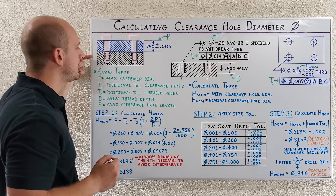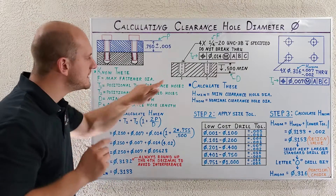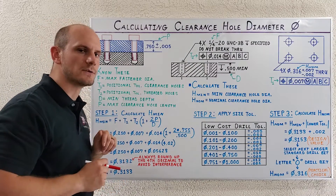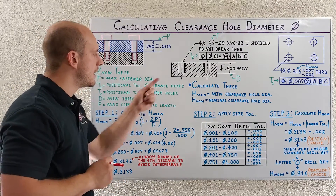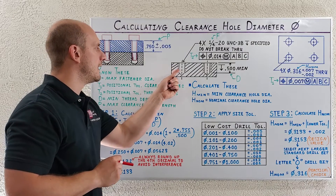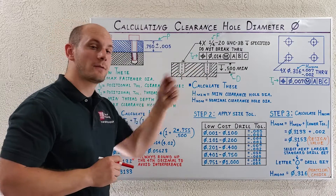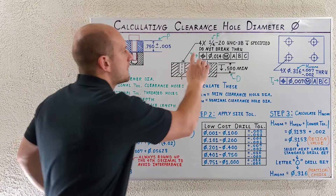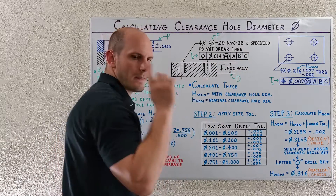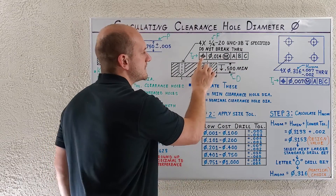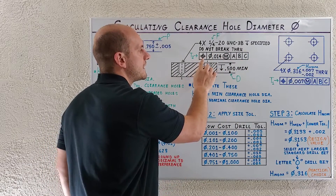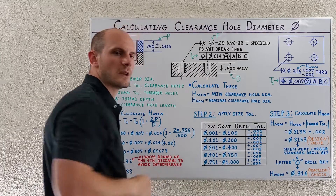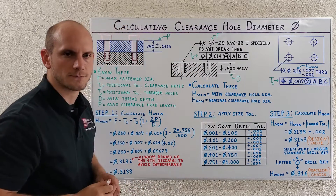For this lower plate I'm detailing that here in this section view. I've got my lower plate, my blind threaded holes, my threaded hole call-out, and then my positional tolerance that I'm using to control the locations of those blind threaded holes.